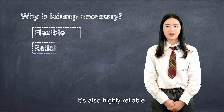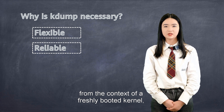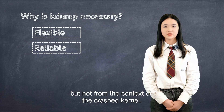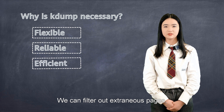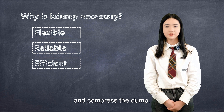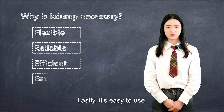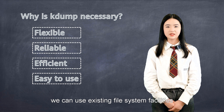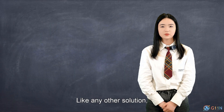It's also highly reliable — the crash dump is captured from the context of a freshly booted kernel, not from the context of the crashed kernel. What's more, KDump is efficient: we can filter out extraneous pages and compress the dump, and so handle large dumps in a short time. Lastly, it's easy to use when writing dumps over a network — we can use existing file system facilities to share dump space without special preparations.